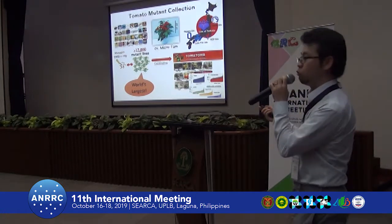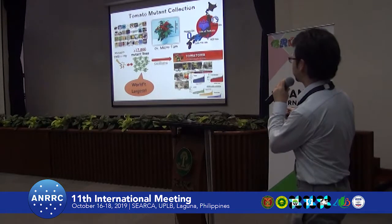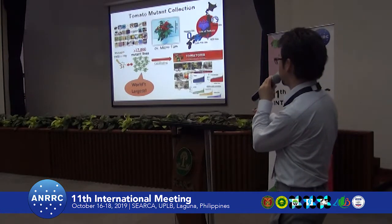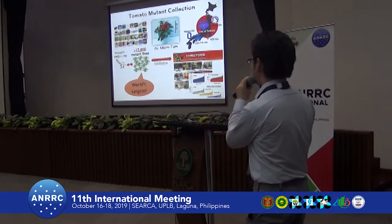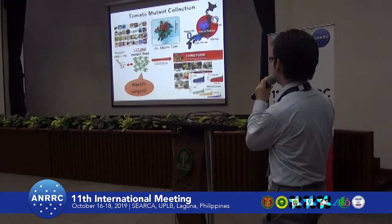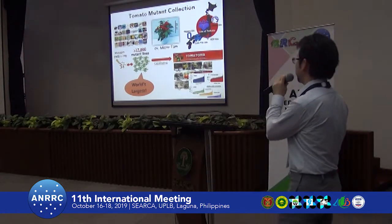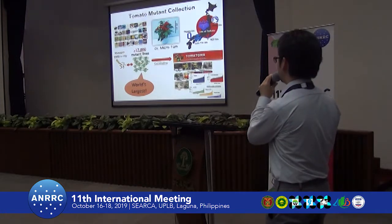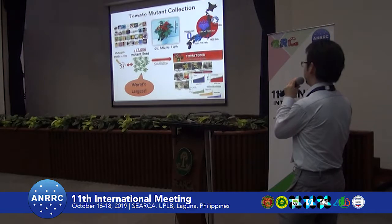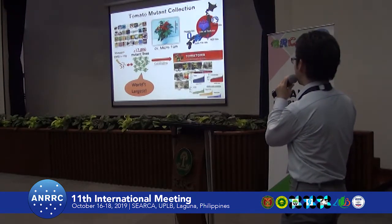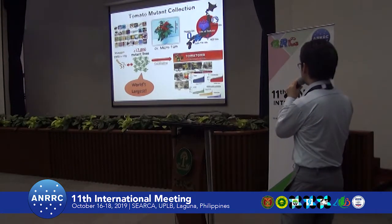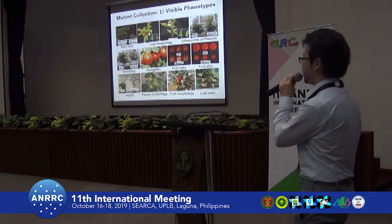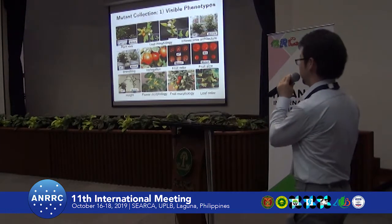The main diverse source of Micro-Tom is the mutant collection. To obtain the mutant collection, we use mutagens like EMS chemical mutagenesis and also gamma ray irradiation for the seeds. So far we have already collected more than 17,000 mutant population lines, which makes the world's largest mutant population of tomato. We can catalog these mutant populations on our specific tomato database, which I will introduce. In this database, we provide pictures and images of the mutant lines.